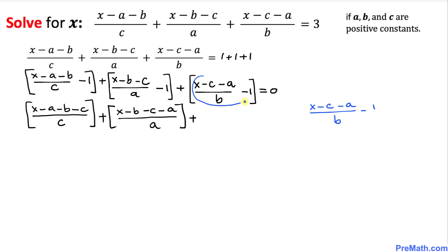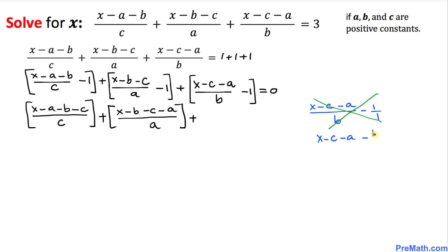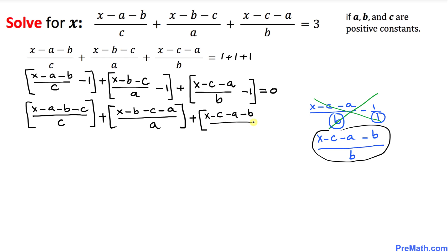Now let's focus on the last bracket. We have (x minus c minus a) over b, minus 1. Making the 1 a fraction and cross multiplying: 1 times (x minus c minus a) gives x minus c minus a, and negative 1 times b gives negative b, divided by 1 times b which is b. So the last bracket simplifies to (x minus c minus a minus b) divided by b, equal to 0.